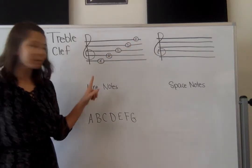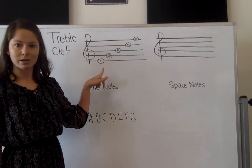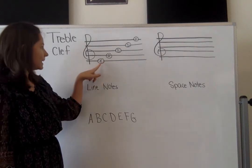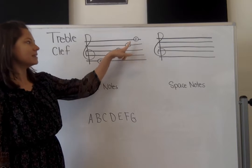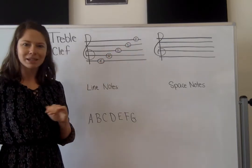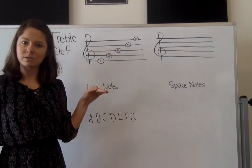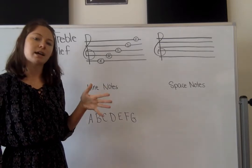Now, they don't go in order because there are space notes in between. If we went up alphabetically, we'd have E, F, G, A, B, C, D, E, F. But it's a lot harder to read music that way than to do it this way and recognize, is it a line note or is it a space note?